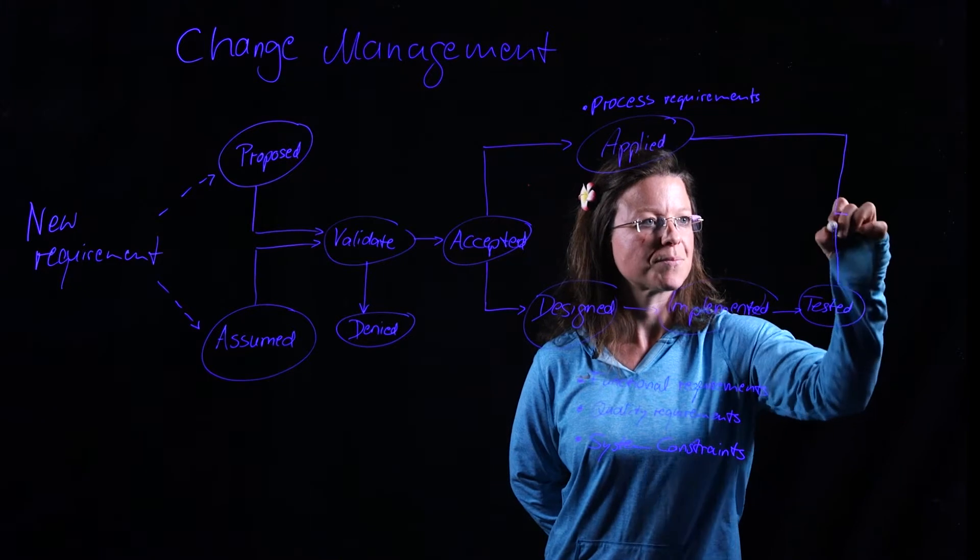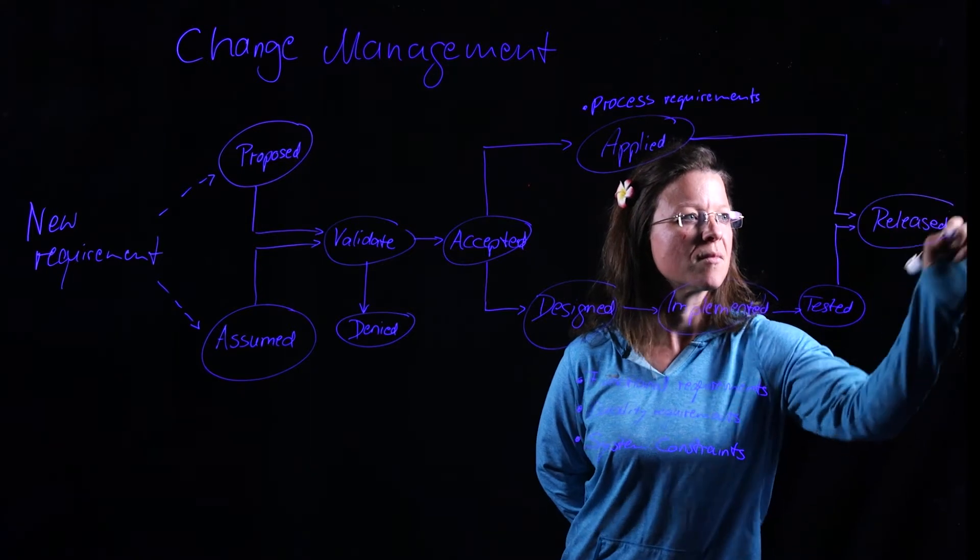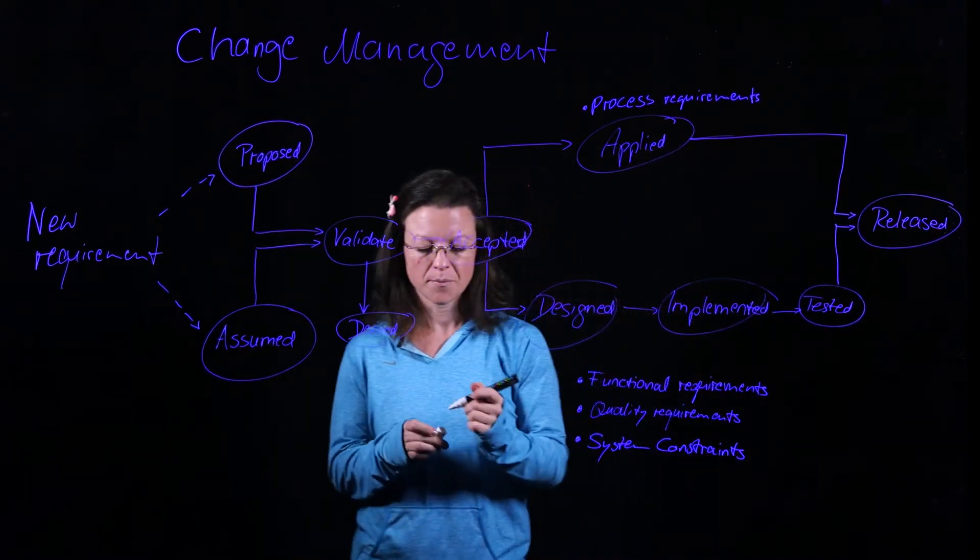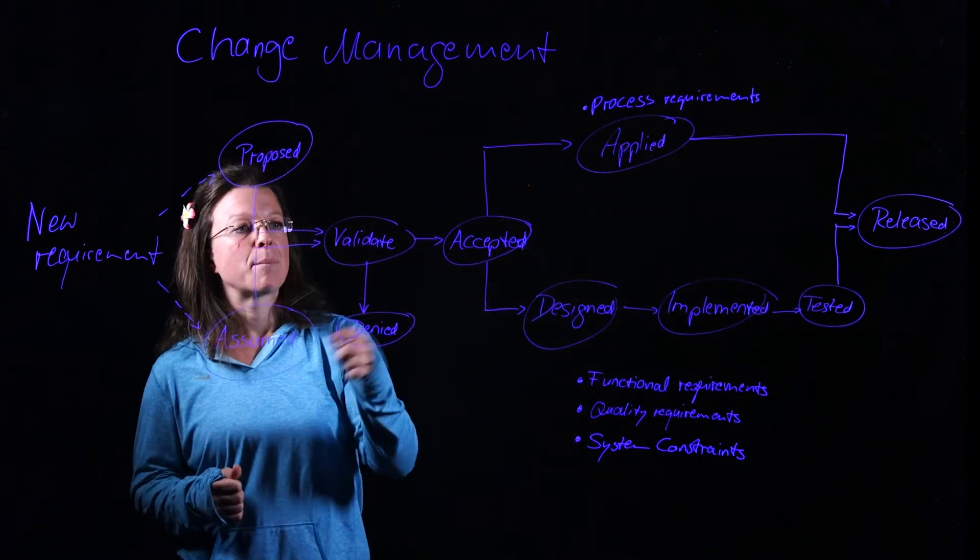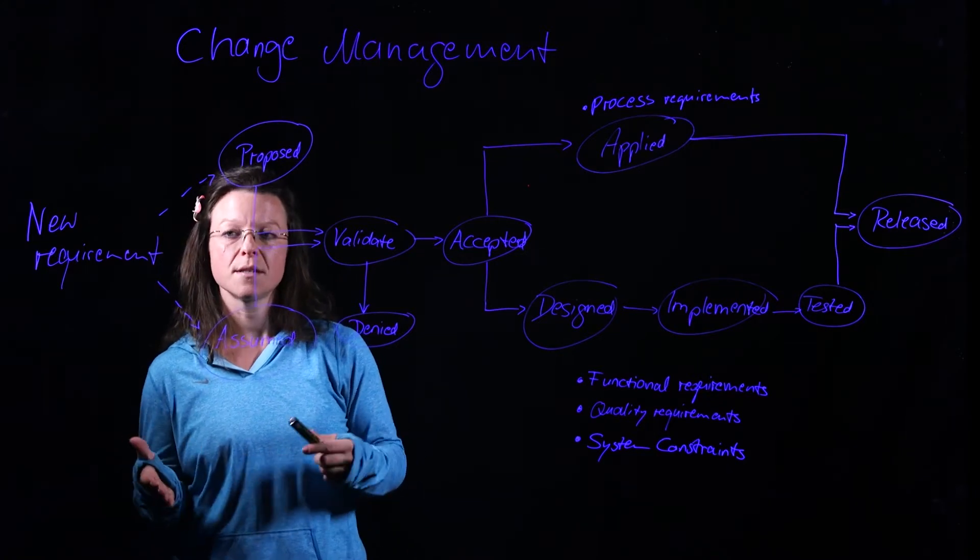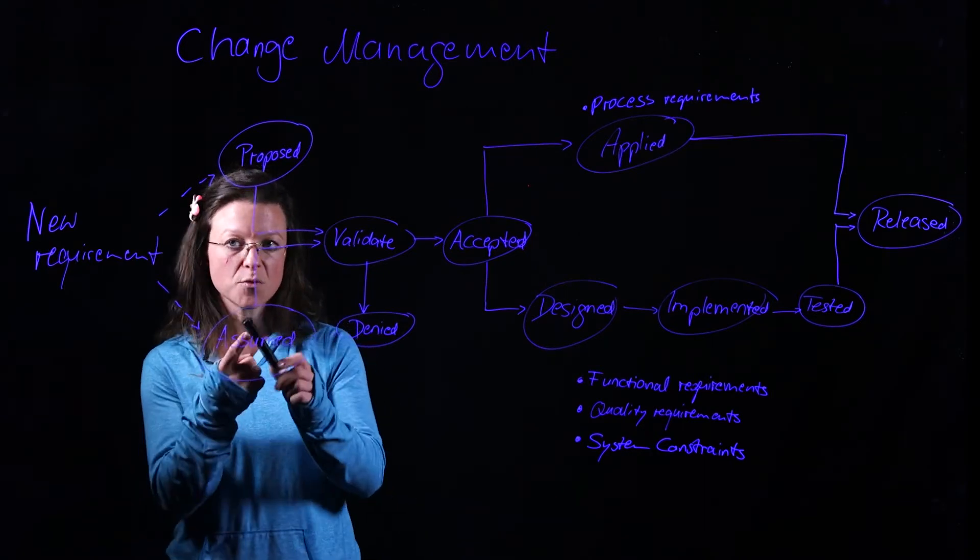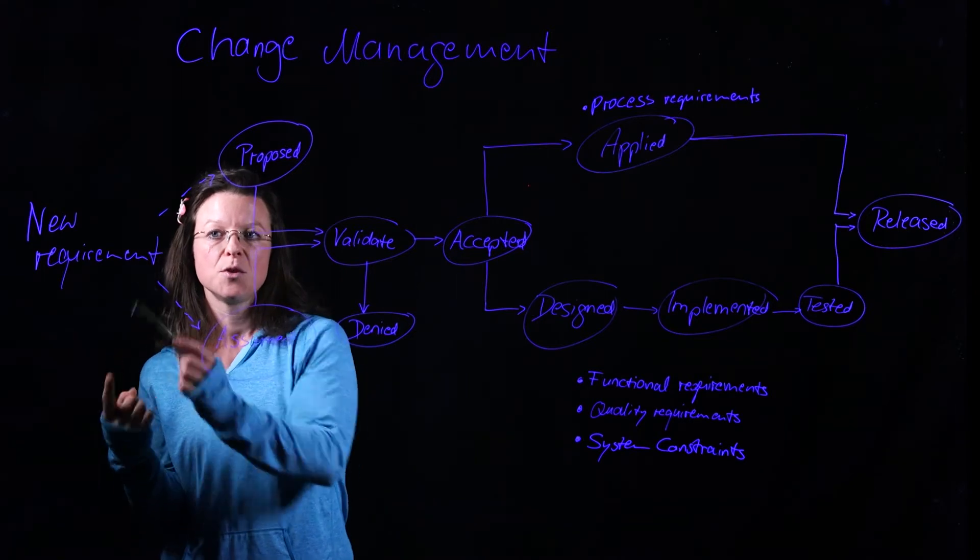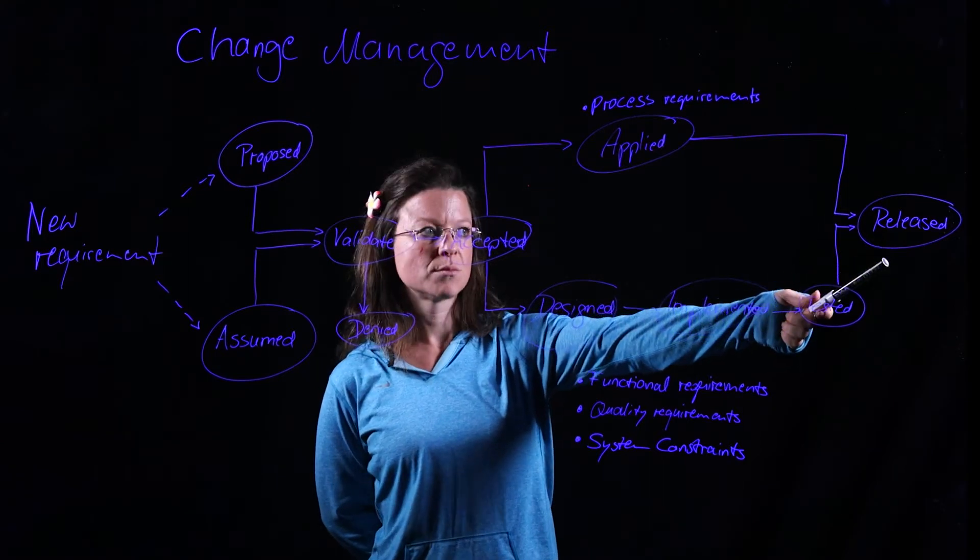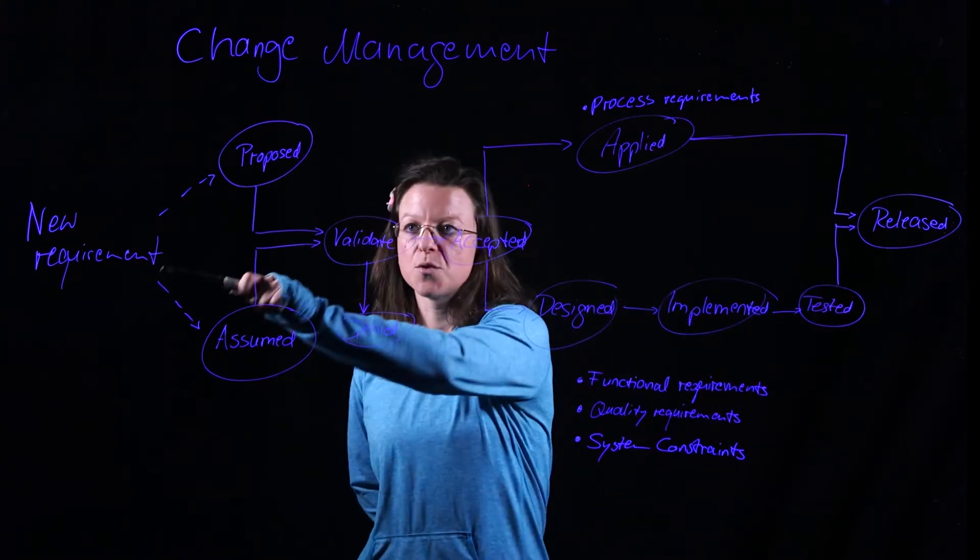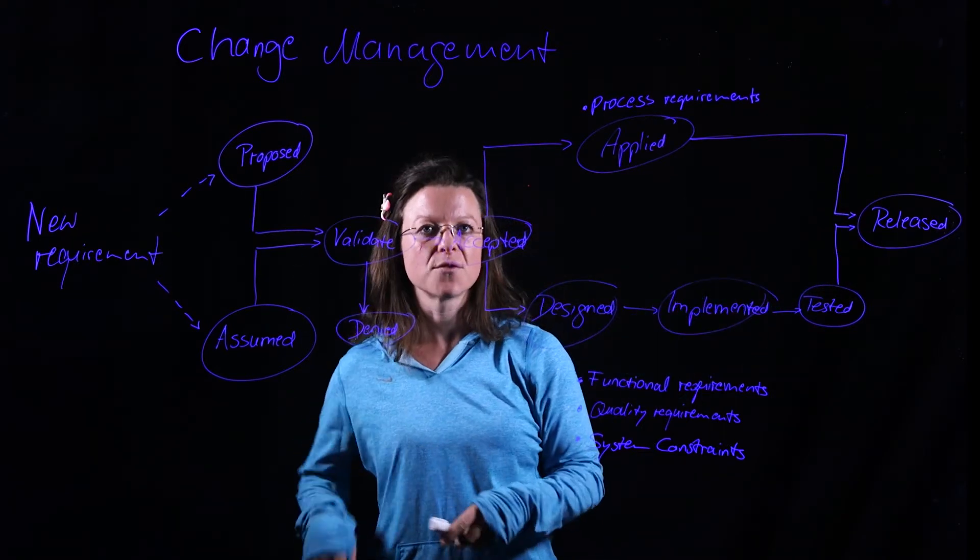And then both end up as released at the very end. So this is the entire process, the entire pathway of stages and states that a requirement will go through in the course of its lifetime, maybe several times. Every version of a new requirement will go through this. I have a new requirement that goes down this route and then it's released in version 1.0. If something in that requirement changes, we're going to do that whole thing again until it gets released in version 1.1, and so on as often as it changes.